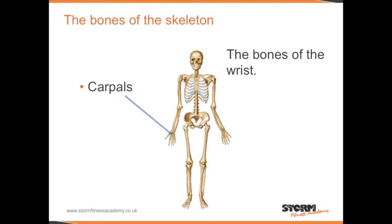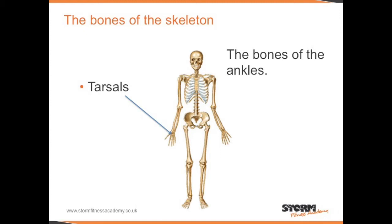The bones of the wrist are called the carpals. The bones of the ankles are called the tarsals. The bone located in the thigh is called the femur.